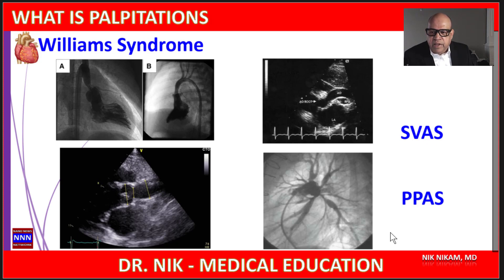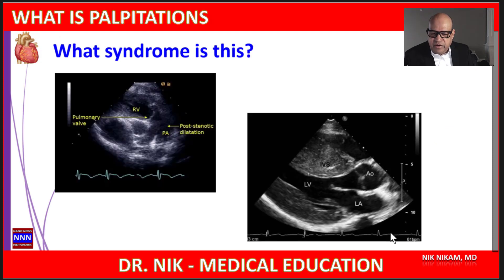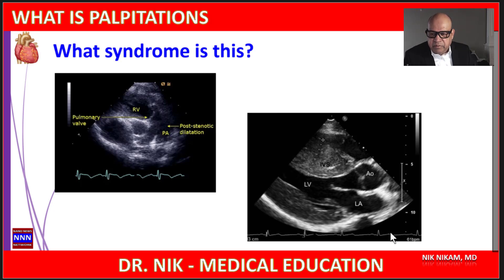So these two findings — supravalvular aortic stenosis and peripheral pulmonary artery stenosis — are characteristic of Williams syndrome. Let's proceed to the next set of images. What do you see here, and what syndrome does this represent? Take a moment, pause the video, come up with your diagnosis, then we will proceed.